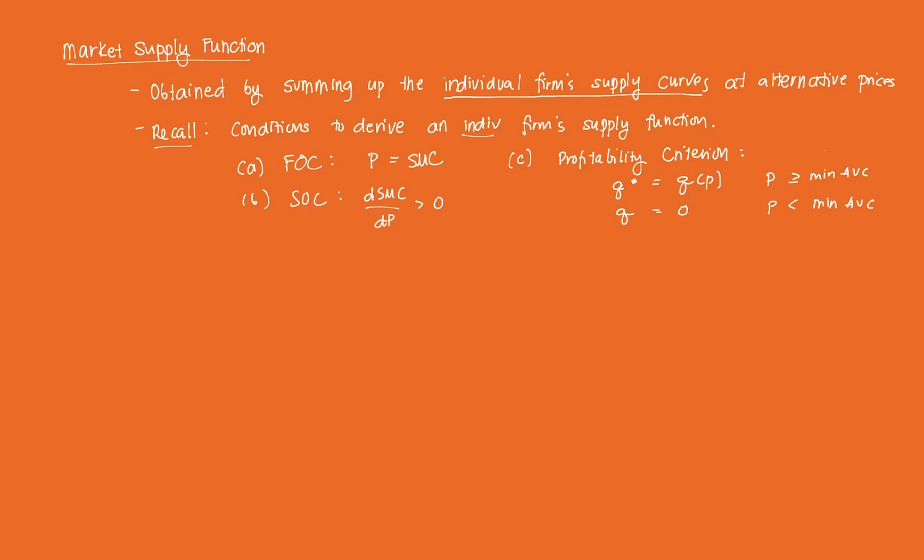The first order condition, which states that P is equal to short-run marginal cost. The second order condition states that the derivative of the short-run marginal cost with respect to price is greater than zero. And the profitability criterion, which states that the firm will produce if the price is greater than or equal to the minimum average variable cost.